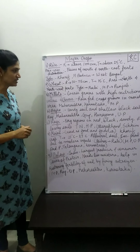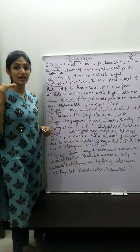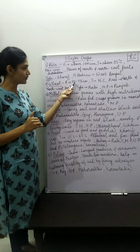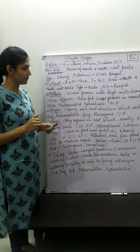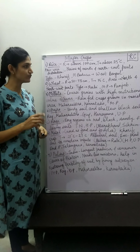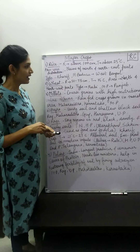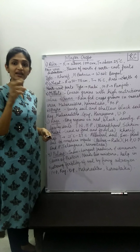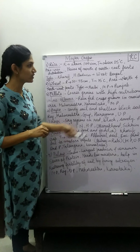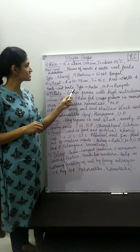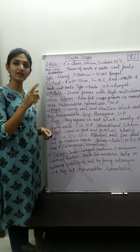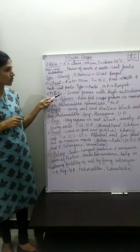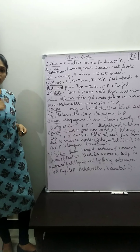Now talking about wheat. If we talk about rainfall, wheat needs less rainfall than rice — we need 50 to 75 cm. Temperature should be 15 degrees Celsius. Now the area: wheat cultivation in India is in the north and north-western parts. So rice is north and north-east, and wheat is just the opposite — north and north-western parts.